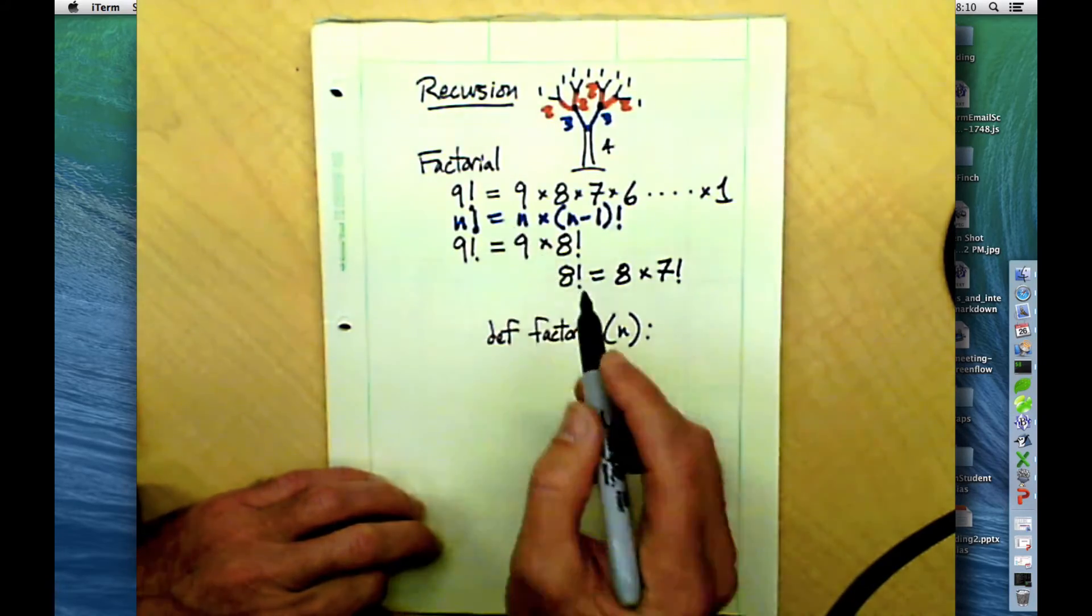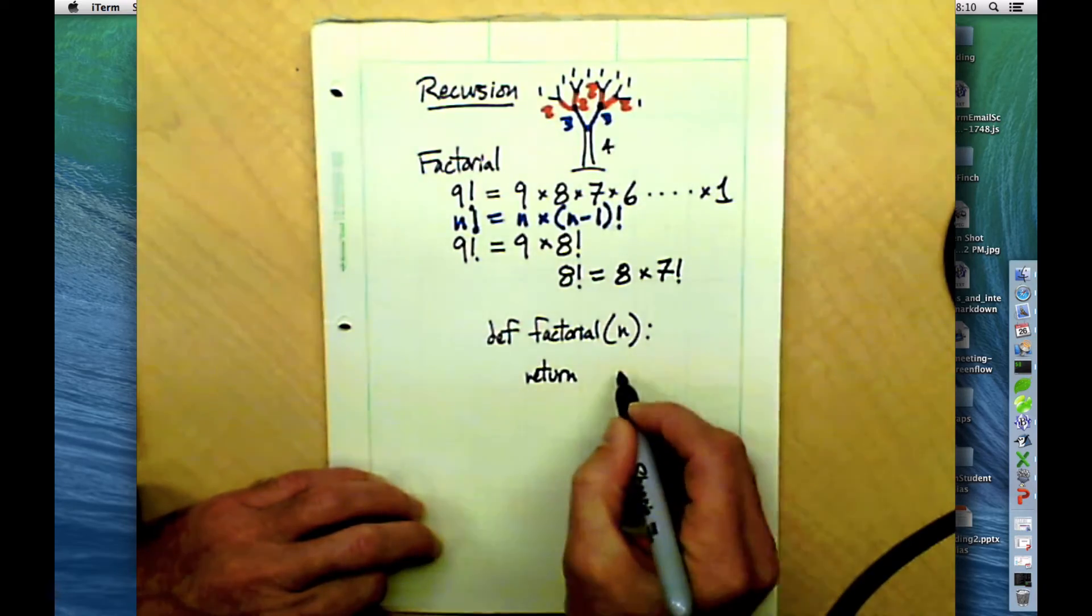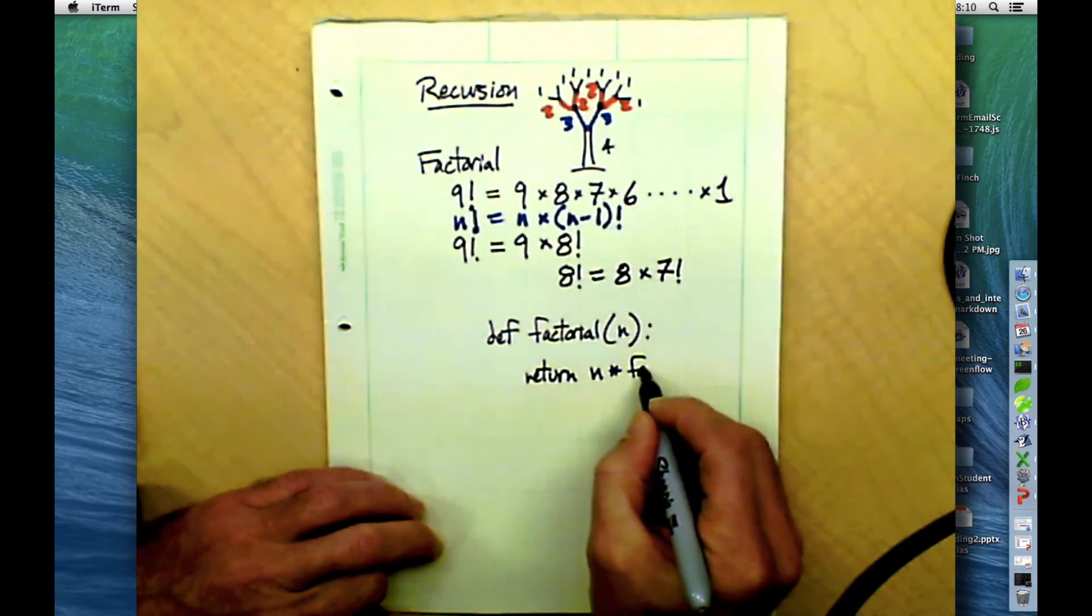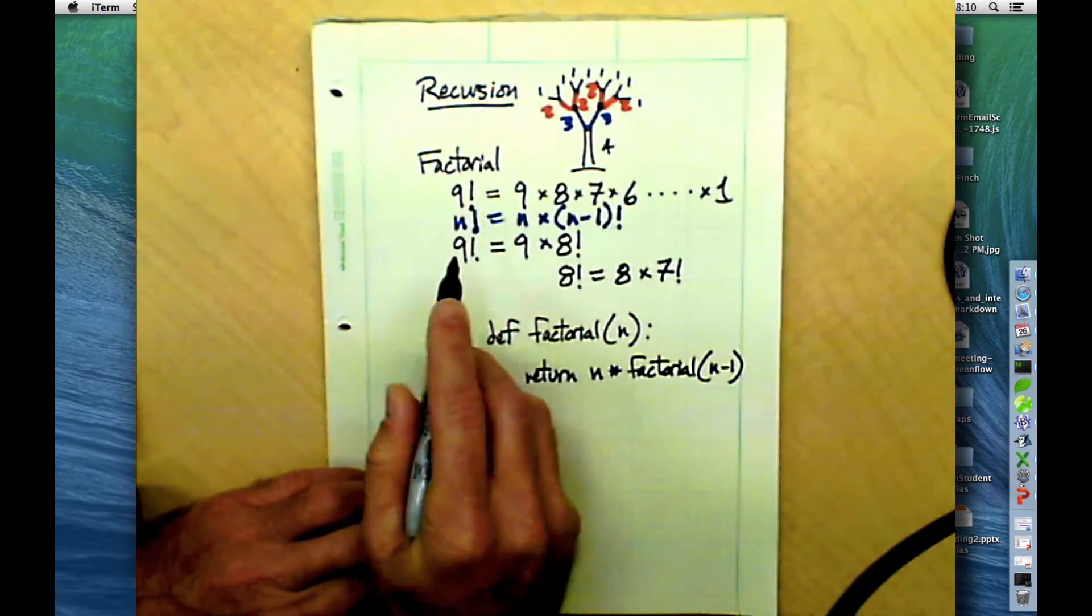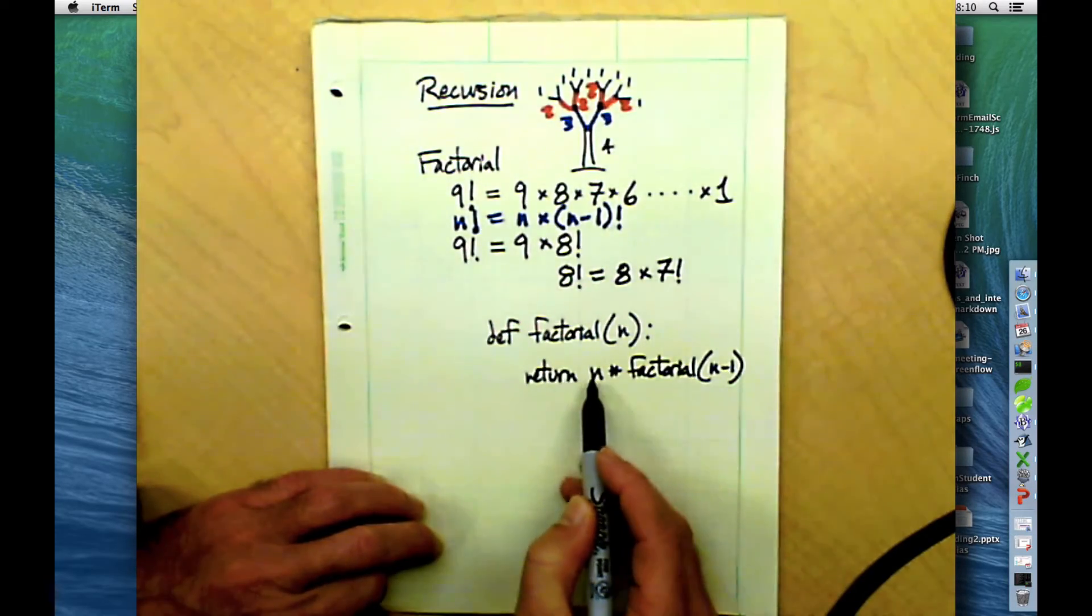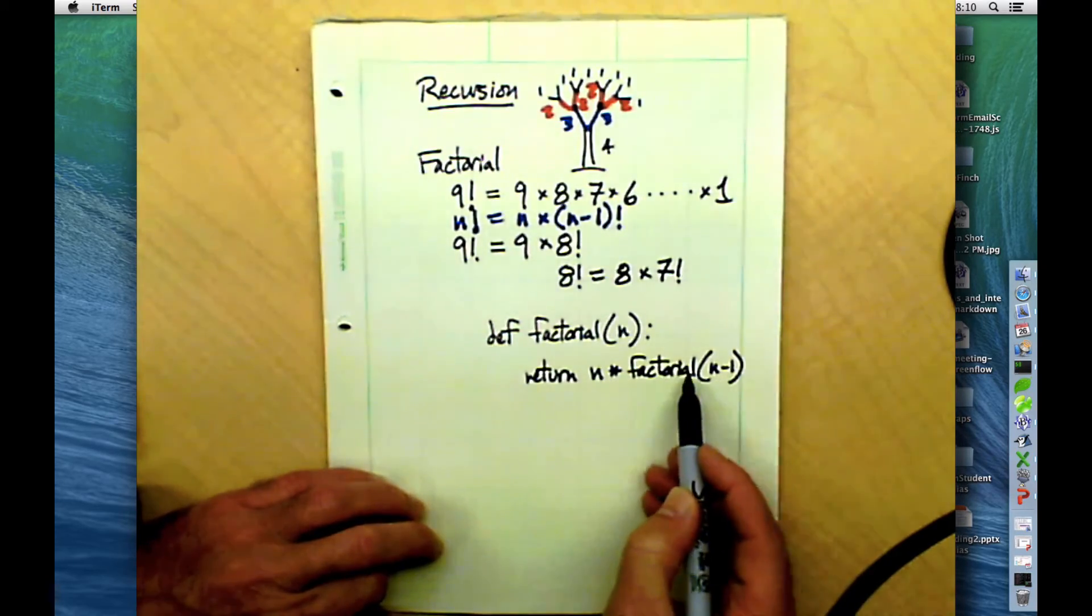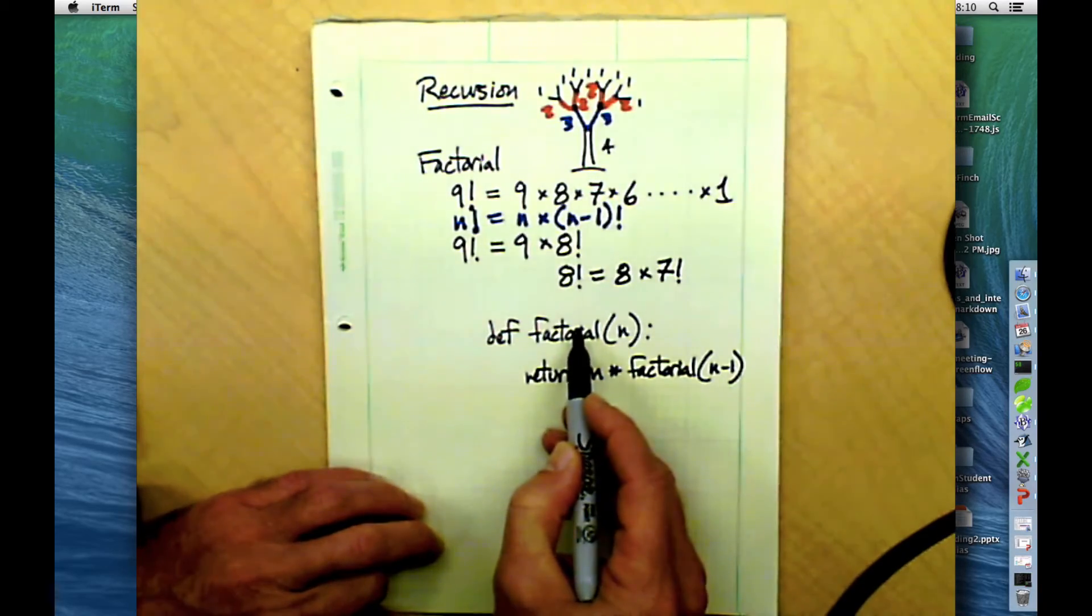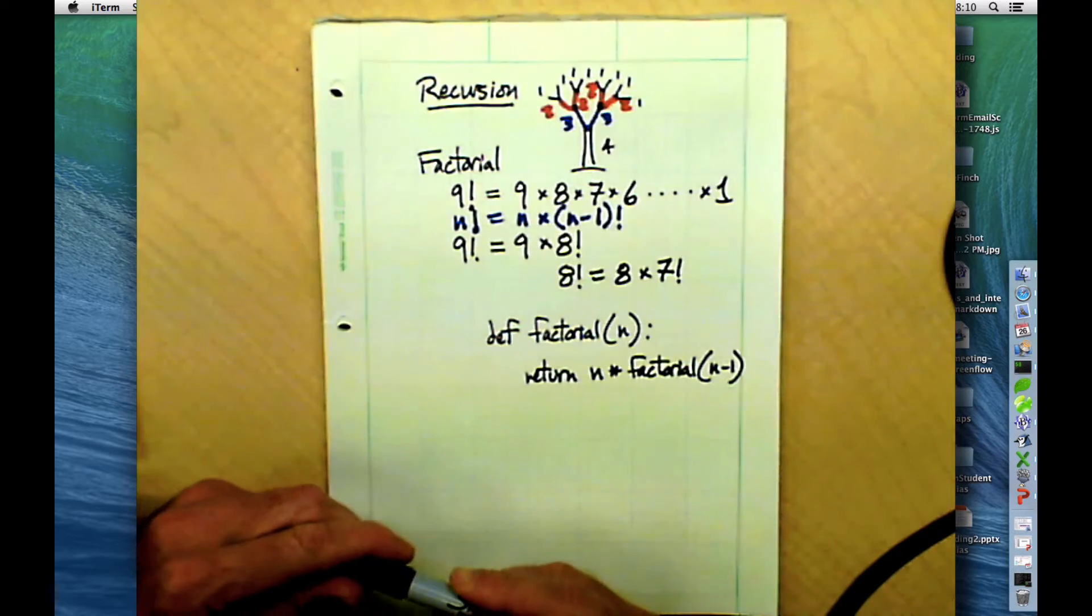This is a very short program. And to calculate the factorial of n, what I'm going to do is return n times the factorial of n minus one. This is just what we've been doing up above with the math. And this is a computer version of that. We're going to send back an answer that is just n times the factorial of n minus one. How will we calculate that? We'll calculate that by calling this function again and returning back to that function.